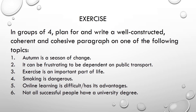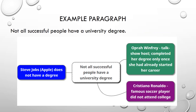Remember to use each of these as a topic sentence for your paragraph. This is an example of how to plan for and write the paragraph using the topic sentence: Not all successful people have a university degree. In this mind map, you can see our central idea — not all successful people have a university degree — and what we have done is written three supporting pieces of evidence. We will look at Steve Jobs, Oprah Winfrey, and Cristiano Ronaldo.